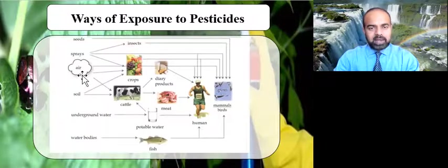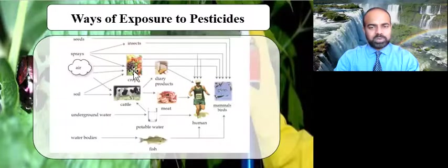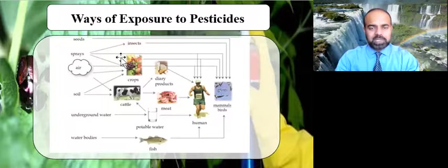From the soil and air, the pesticide can come in contact with the crops as well as the cattle, and then the direct spraying of pesticides on crops or on insects can also be transferred, of course, into the crops and the animals and the livestock, which in turn, when we consume the meat or the dairy product as well as the vegetables itself.